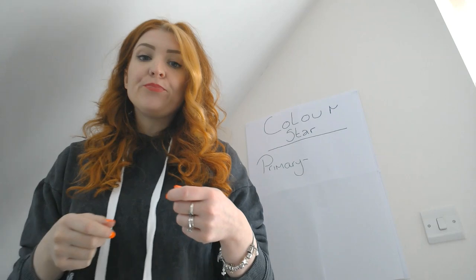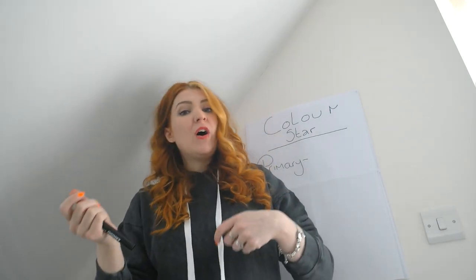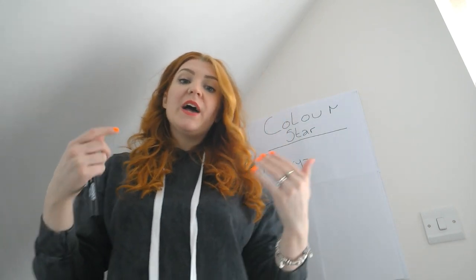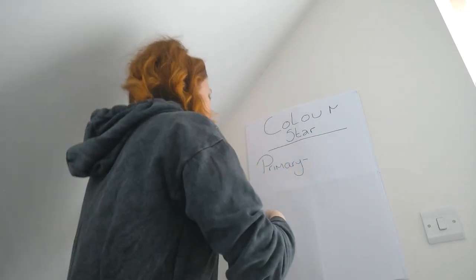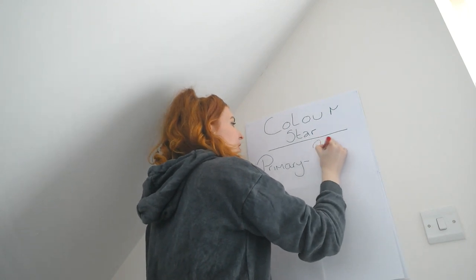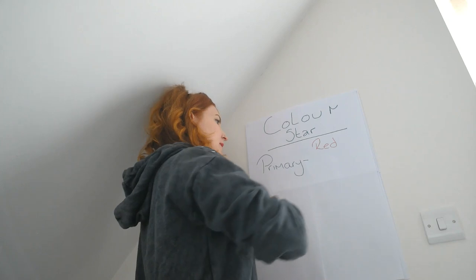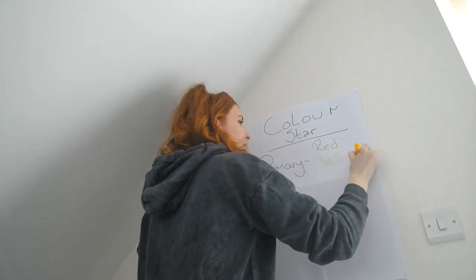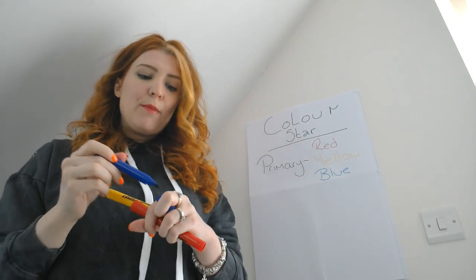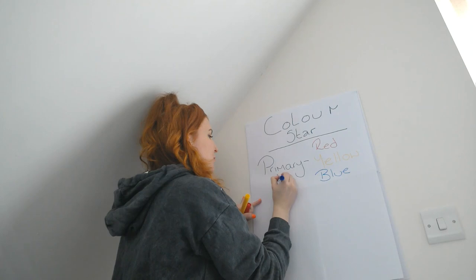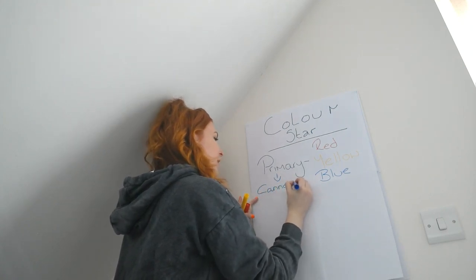Our three main primary colours are colours that cannot be made. Think about when you used to play around with paints, or make your own eyeshadows or lipsticks — what are the colours that cannot be made? Our three primary colours are red, yellow, and blue. So we've got red, yellow, and blue. Primary colours cannot be made.